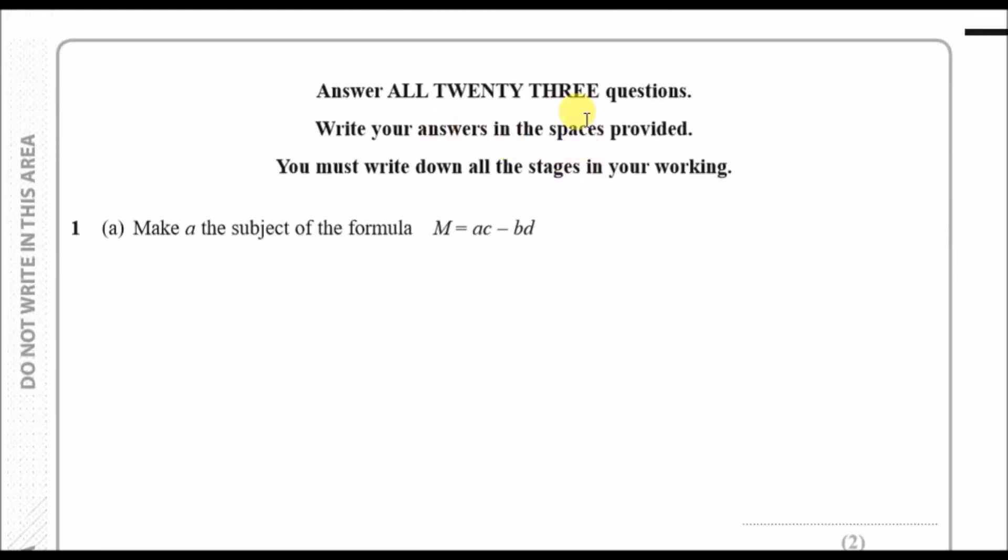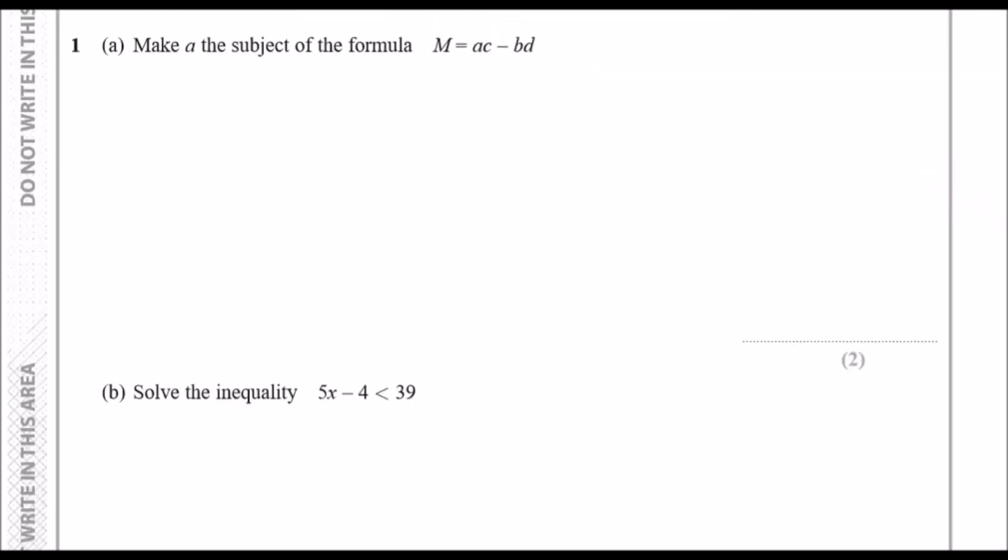Question 1a: make a the subject of this formula. When you want to make a certain letter the subject, write ac minus bd equals m instead of m equals. Always solve with the subject first. Let's get rid of the bd—throw bd across. If it's negative it becomes plus bd because the sign always flips when you throw across the equal sign. Then to separate the c from the a, just divide by c. So a equals m plus bd over c, and that's it.